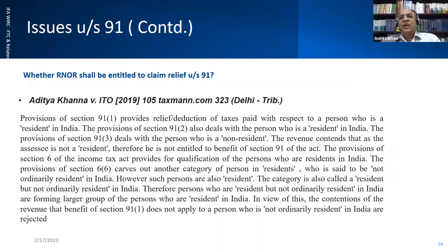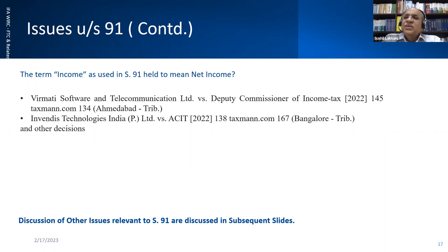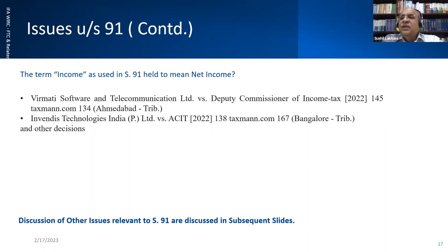Another issue on Section 91: whether a 'resident but not ordinarily resident' is also entitled to claim relief. Courts said yes in Aditya Khanna's case. The word 'income' in Section 91 also came up — whether it means gross income or net income. Some decisions held it is only the income after TDS or withholding tax without grossing up. Courts held it means net income, i.e., after all expenses — net income is to be taken into account, not gross foreign income.